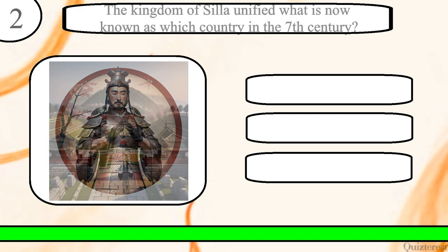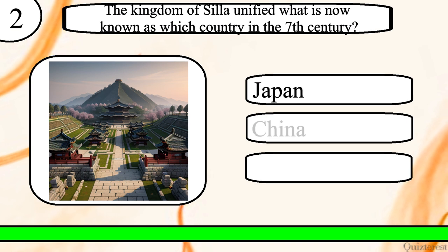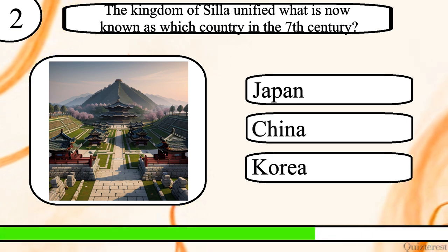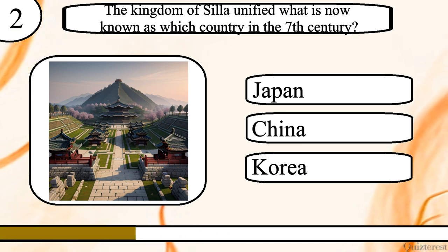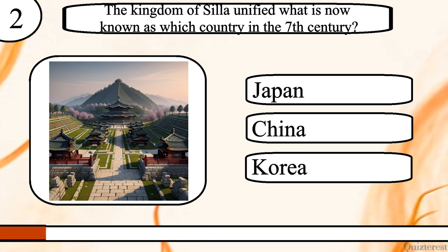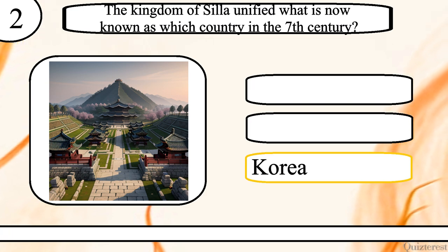Question 2. The kingdom of Silla unified what is now known as which country in the 7th century? Japan, China or Korea? The correct answer is Korea.